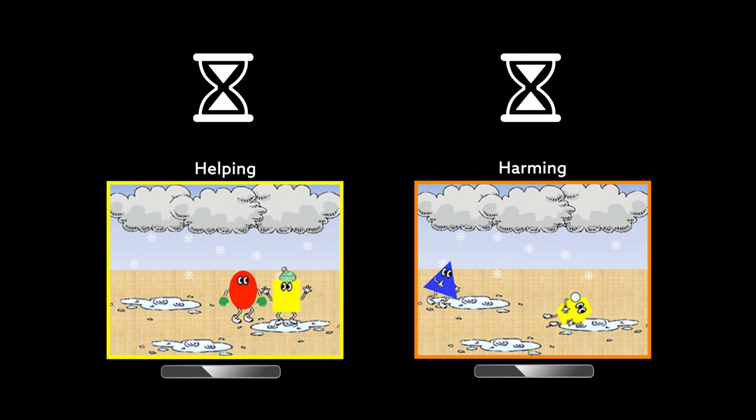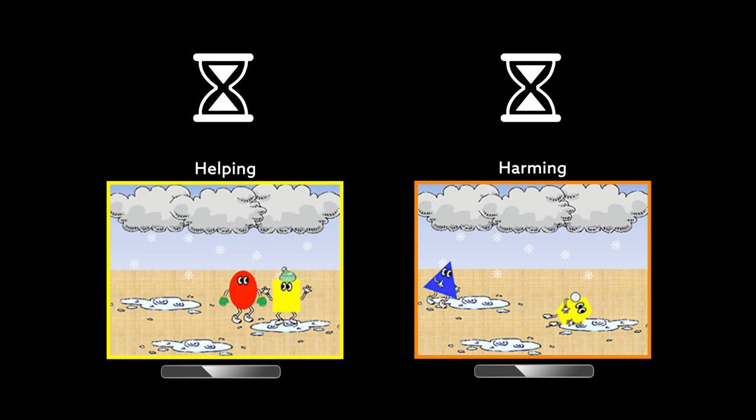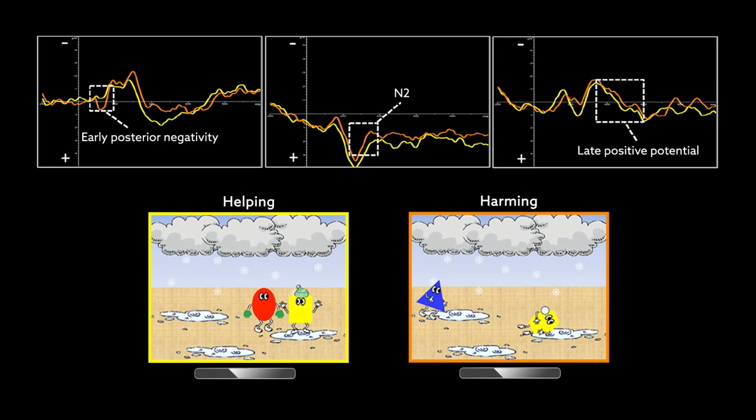Although eye tracking showed that the amount of attention paid to the characters and their actions did not differ between the two types of scenes, differences in brain activity were observed depending on whether the children viewed a helping or a harming scene.